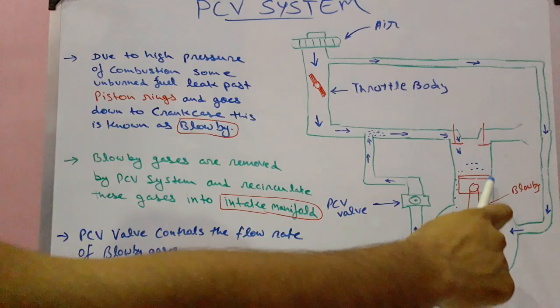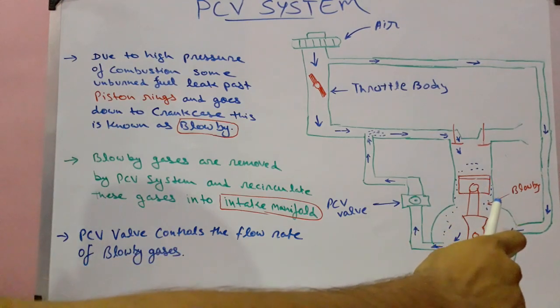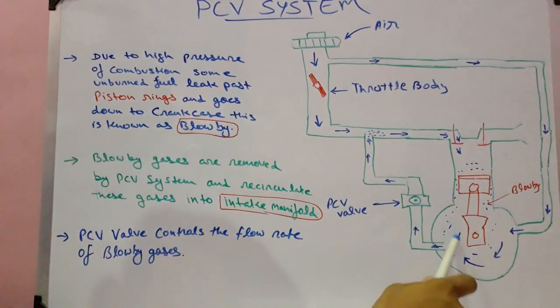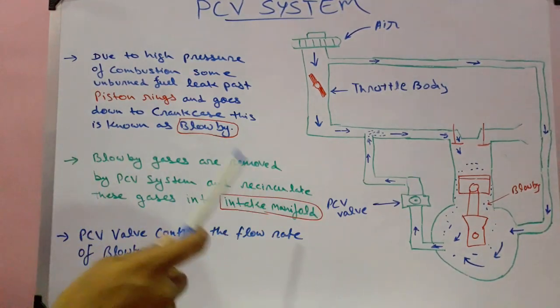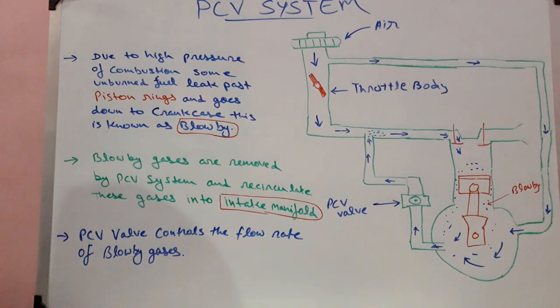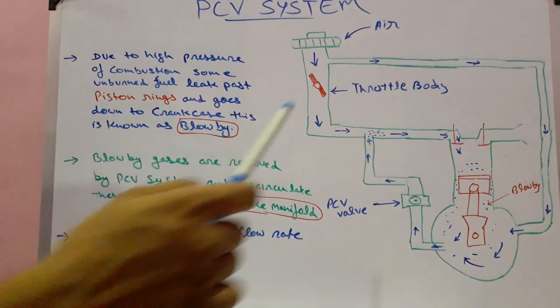...leak past the piston rings and move into the crankcase. This phenomenon is known as blow-by. As mentioned, these are unburnt fuel and hydrocarbons, so these hydrocarbons and other products are being recirculated by the PCV system.